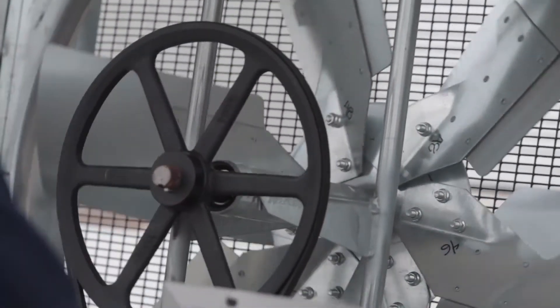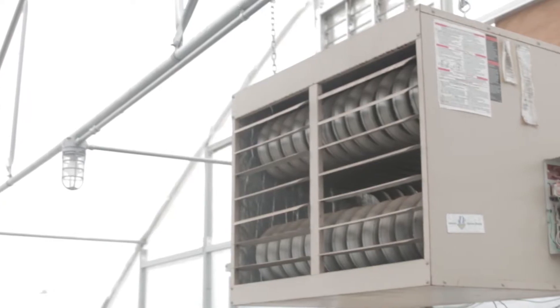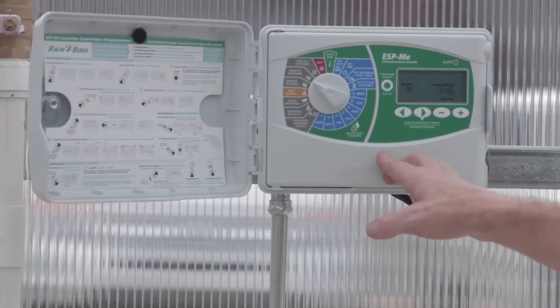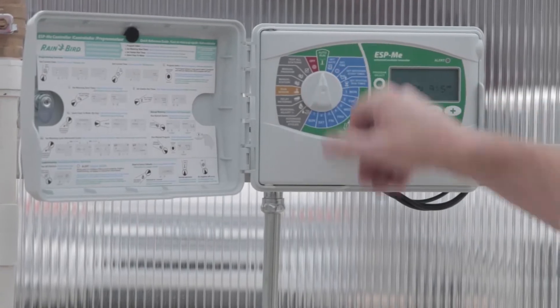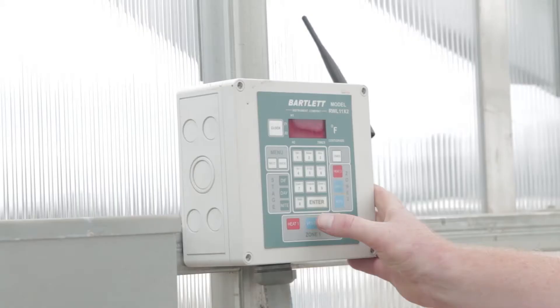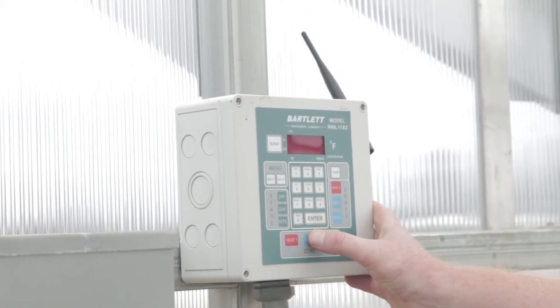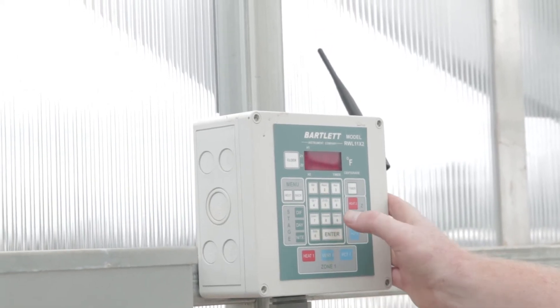The system includes high-efficiency exhaust fans, power-vented gas heaters, horizontal airflow fans, and a fully-programmable irrigation system. All equipment is controlled from an environmental controller that can be set at your desired temperature point.